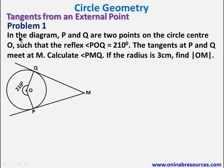Problem 1. In the diagram, P and Q are two points on the circle center O, such that the reflex angle POQ is 210 degrees. The tangent at P and Q meet at M. Calculate PMQ. If the radius is 3 centimeters, find OM. So we take it one after the other.